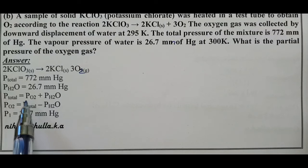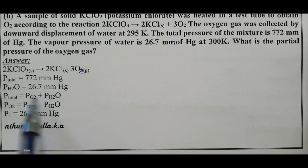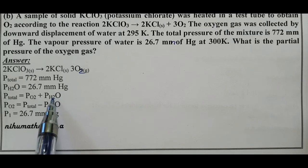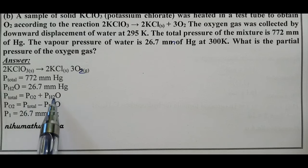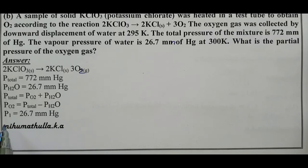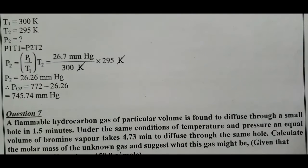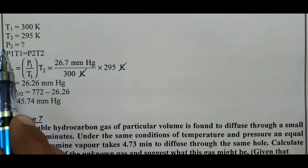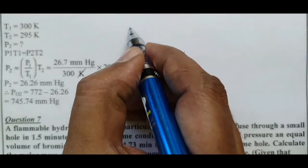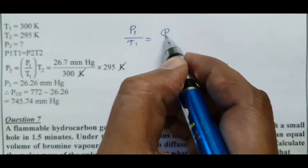P_total = P(O2) + P(H2O). So P(O2) = P_total − P(H2O). The vapour pressure at 300 K is 26.7 mmHg, but we need to correct it to 295 K using Gay-Lussac's law: P1/T1 = P2/T2. P1 = 26.7 mmHg, T1 = 300 K.